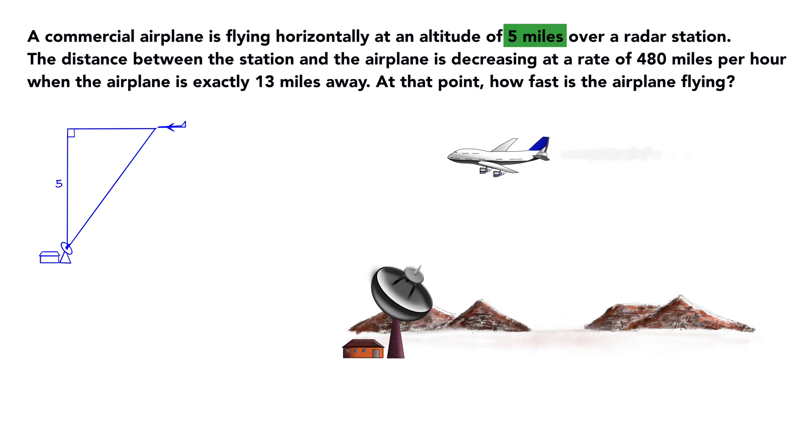Label what we know, 5 miles over a radar station. We don't know the horizontal distance yet. Let x equals the horizontal distance from the radar station. Since y should be the vertical distance, but we already know it, the 5 miles.